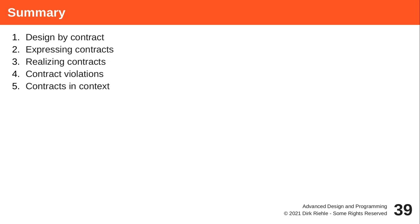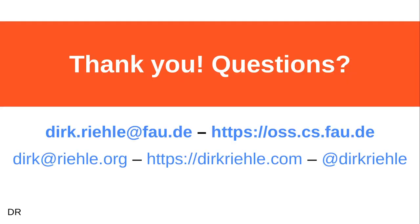In this lecture we talked about design by contract — how to express it as a design-level construct, how to program it in common programming languages like Java using assertion methods to identify contract violations. The key takeaway is: if you want to keep it lightweight, focus on testing preconditions at the beginning of a public-facing service method to ensure the parameters are valid. That gives you the biggest bang for the buck. Thank you very much for your time and attention, and see you in the next lecture.